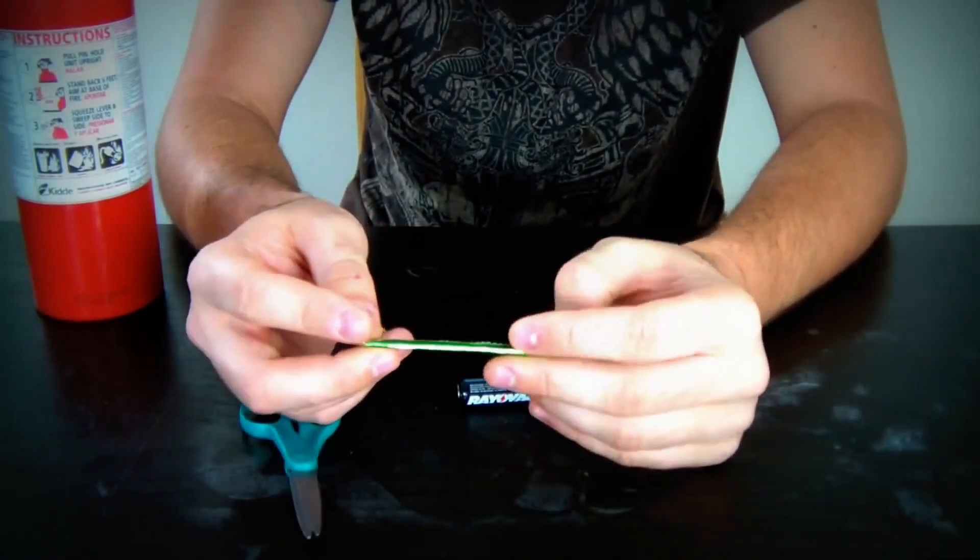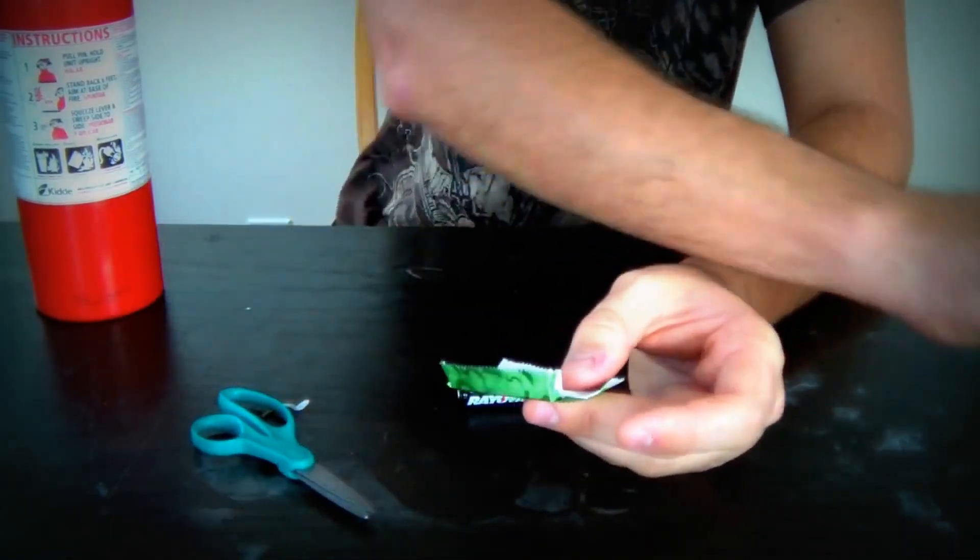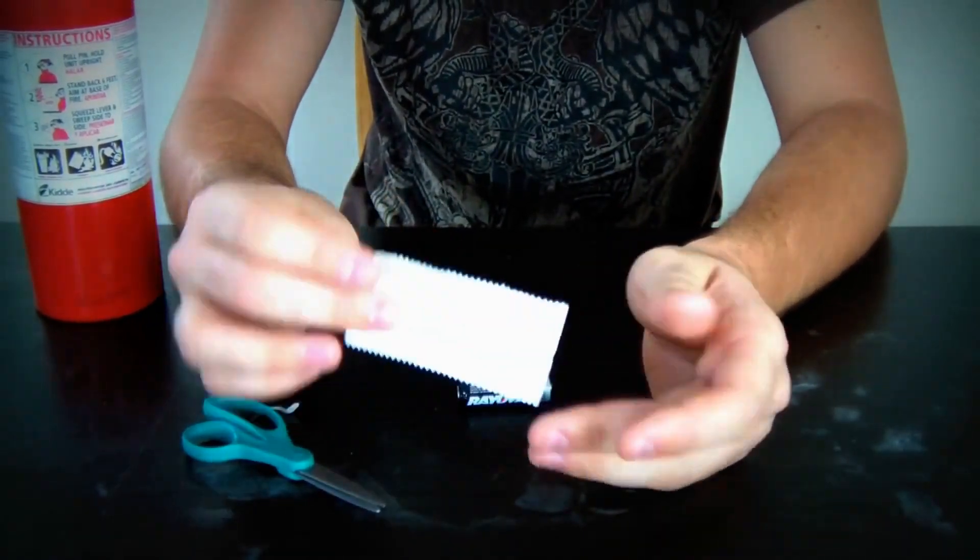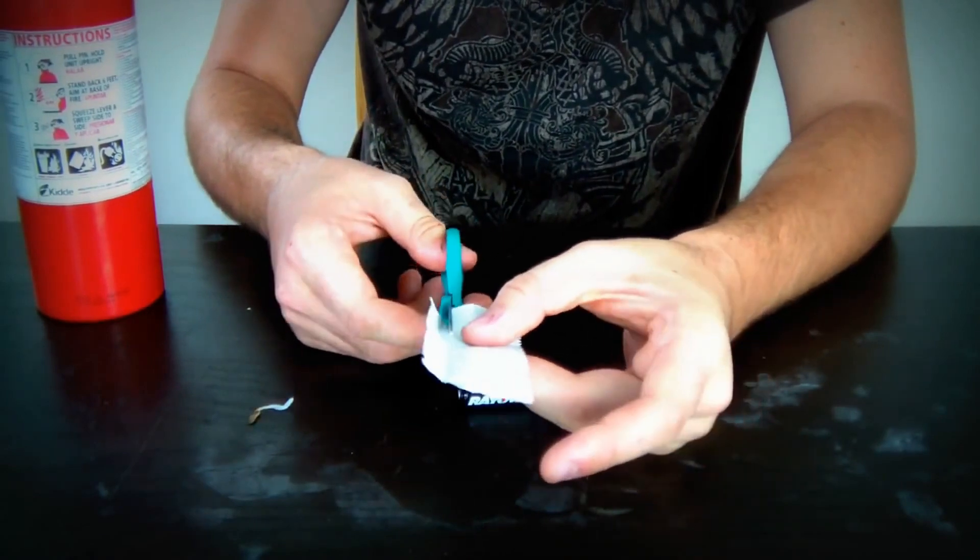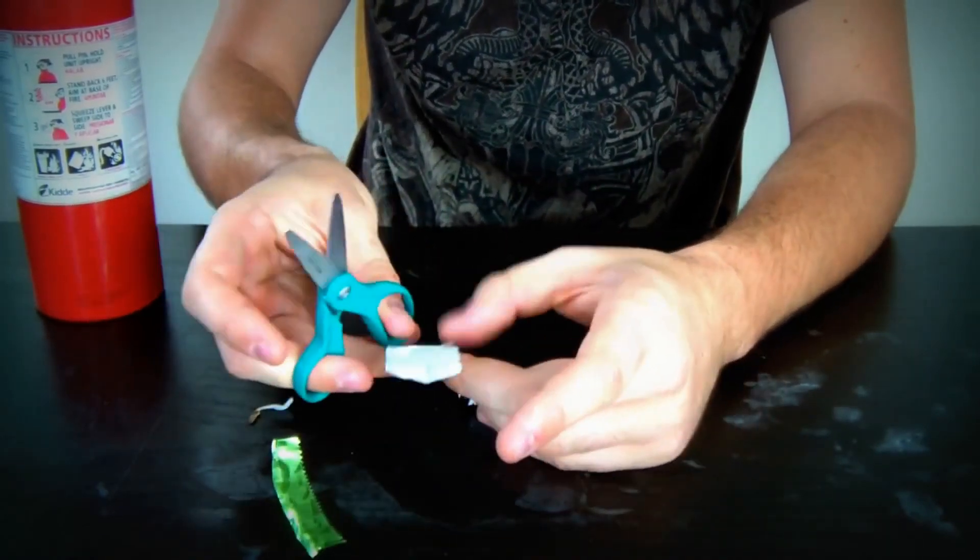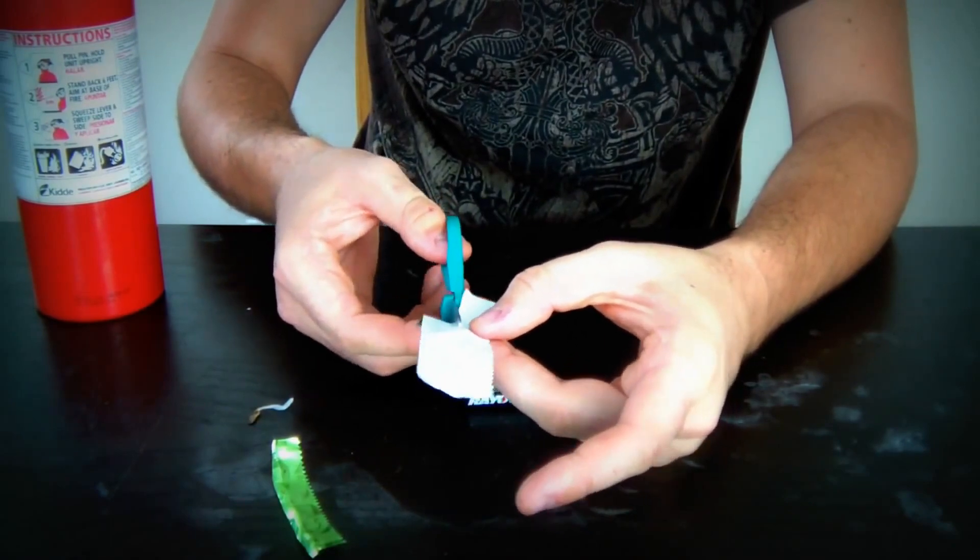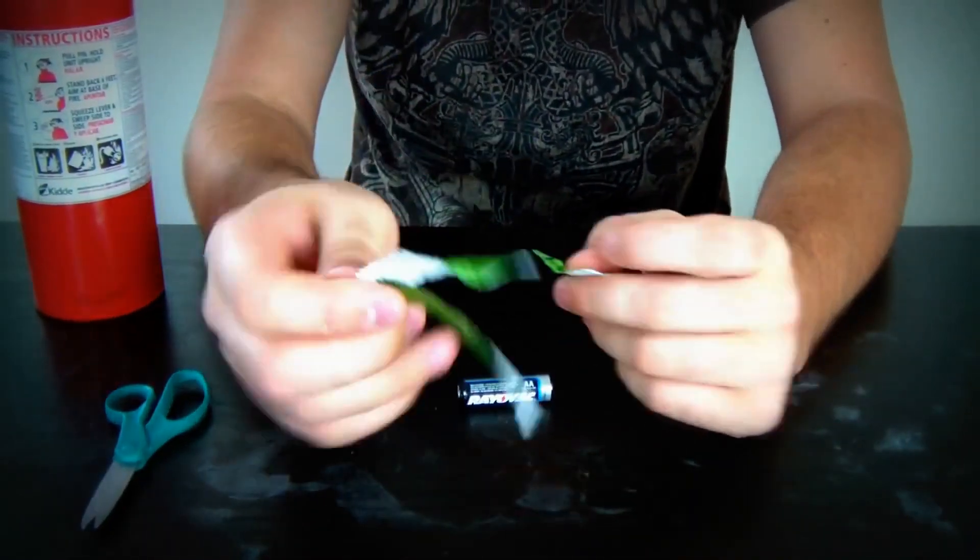We're going to need aluminum foil. This one right here you can use three times. You can cut it in three pieces. You got one, two, and three. Save these two for later. You want to have it in stock because you might have to make fire many times.